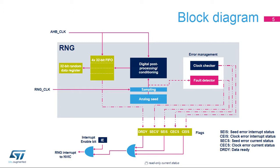The random number generator is based on an analog circuit made of several ring oscillators, whose outputs are sampled and then XORed to generate the seeds that feed a digital post-processing block able to produce four 32-bit random numbers per round of computation. The sampling of analog seeds is clocked by a dedicated RNG clock signal so that the quality of the random number is independent of the HCLK frequency.